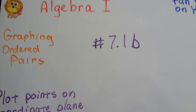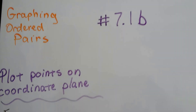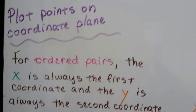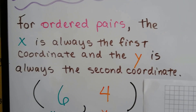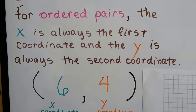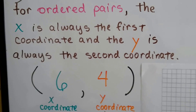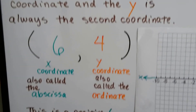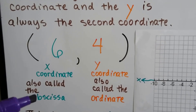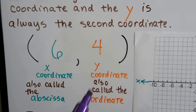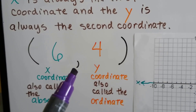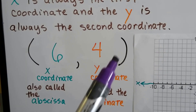We're at 7.1b, and we're going to plot points on a coordinate plane. For ordered pairs, the x is always the first coordinate and the y is always the second coordinate. The x is also called an abscissa, and the y is also called an ordinate, and they're always separated by a comma when they're in parentheses.